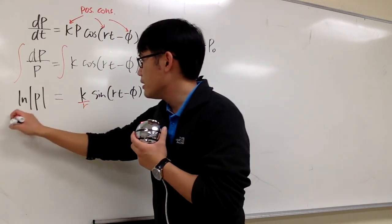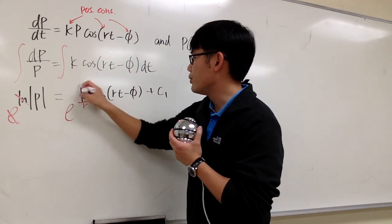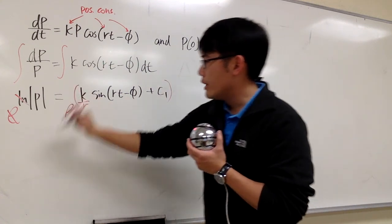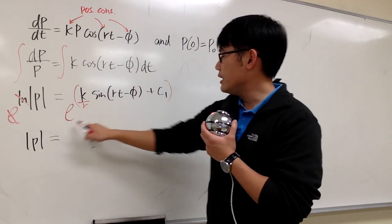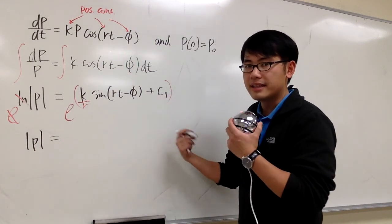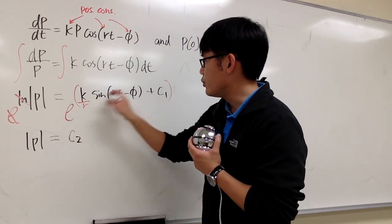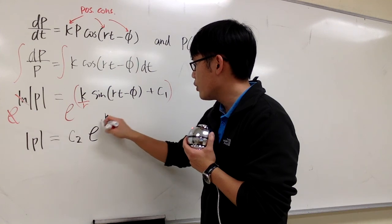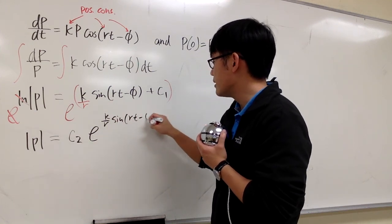And let's isolate the p to e to the power, so they cancel. And I will do this, e to the power. And we have absolute value of p. This is equal to, notice that e to the constant right here, e to c1, it's another constant. I will call that c2. And the function part stays the same, e to the k over r, sine of rt minus v.